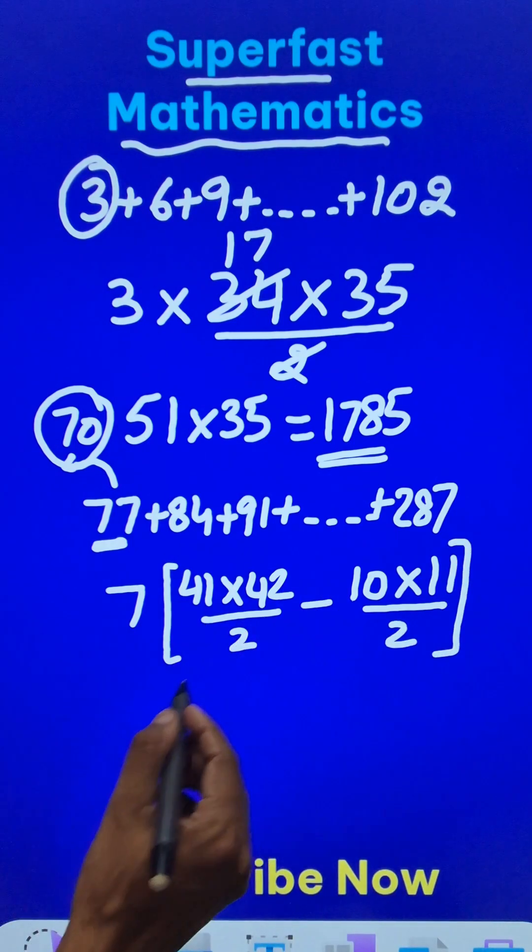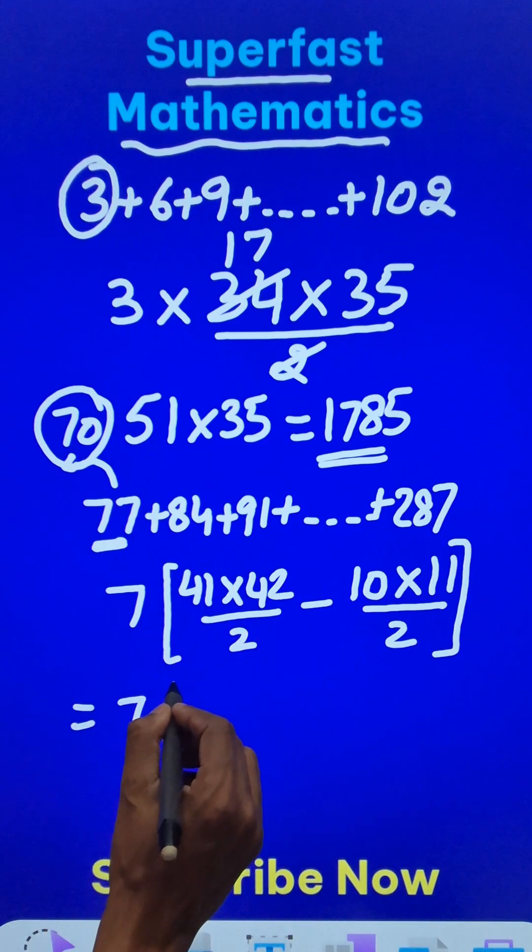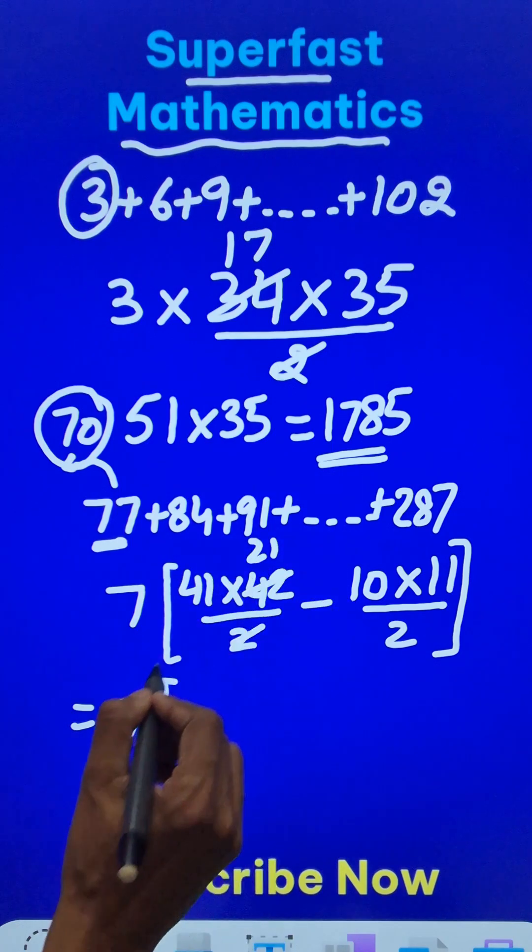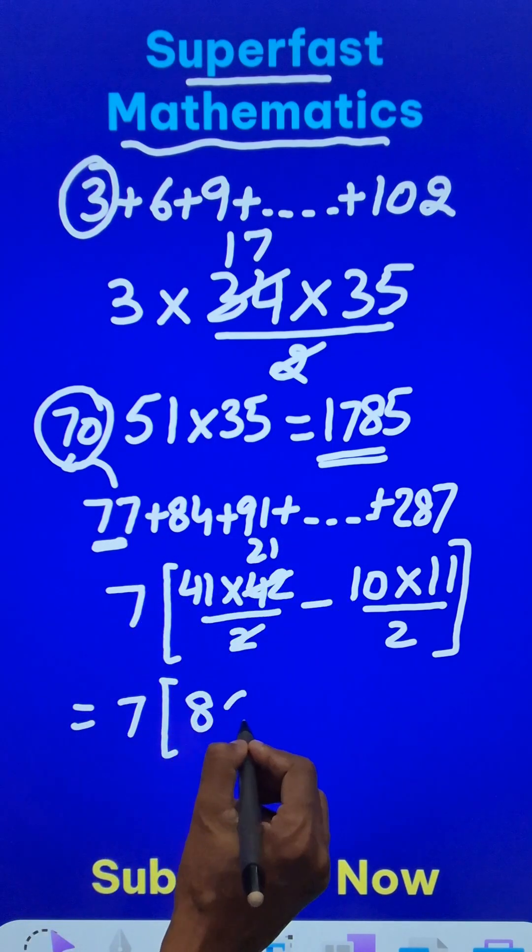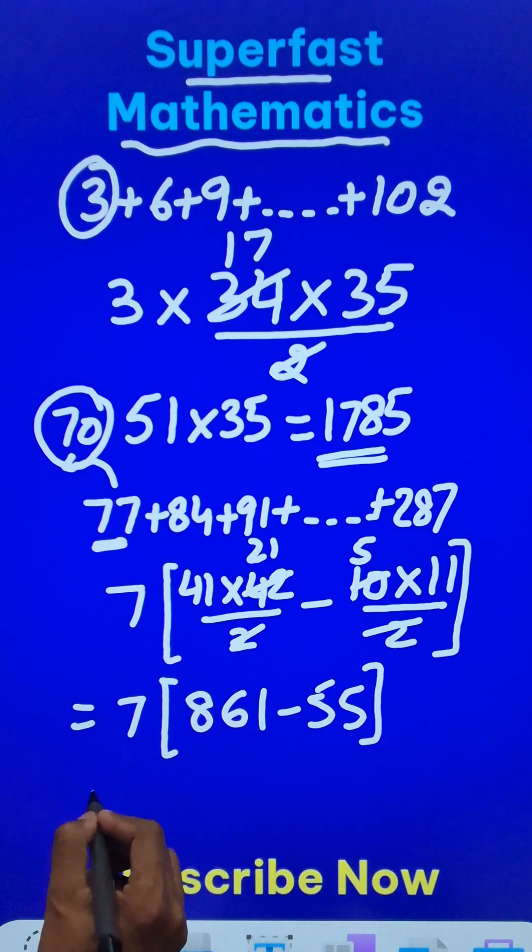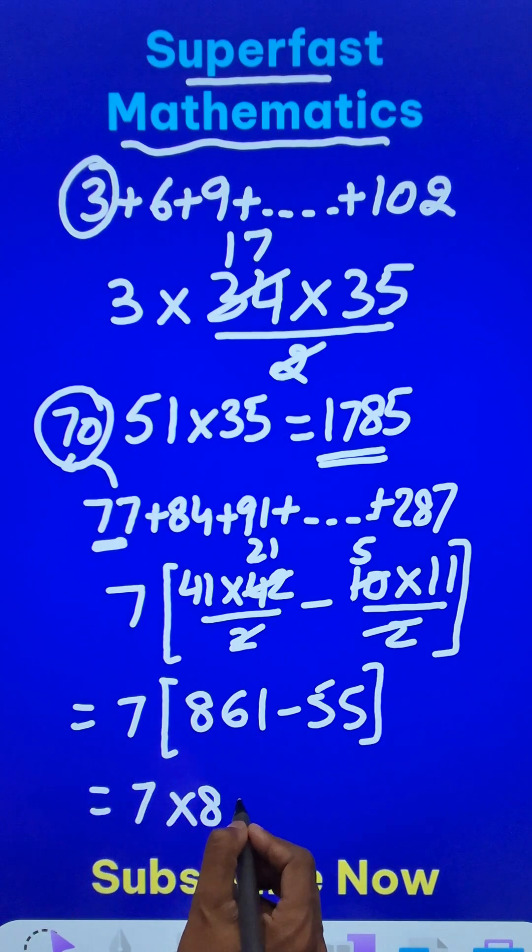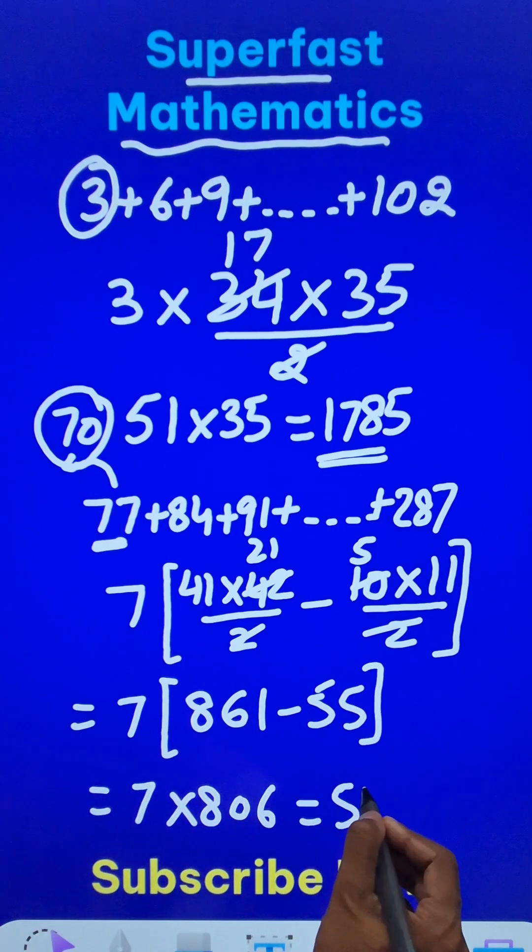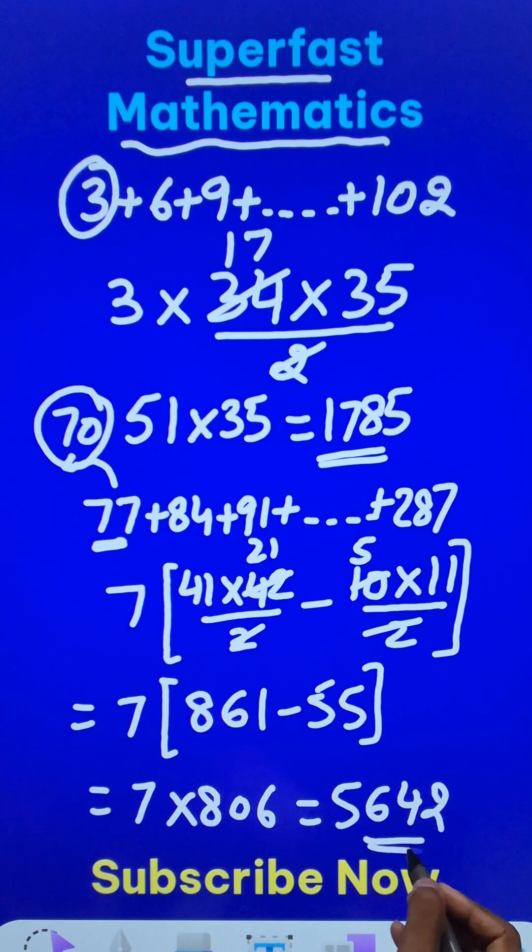And now just do this basic calculation. You will get your answer 7 times. This 2 cancels this, 21 times, and this becomes 861 and this cancels 5 times. So this is 55 and your answer for the question is 7 times 806, which gives us 5642 as the answer for the question.